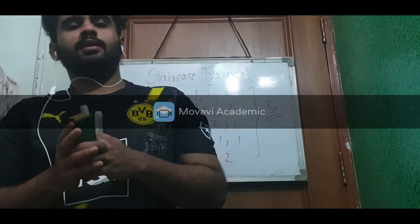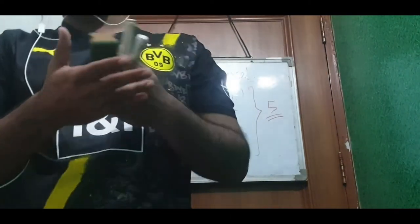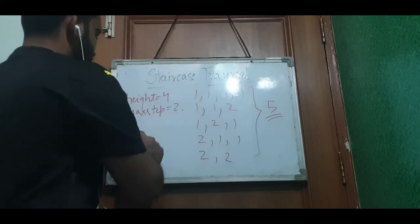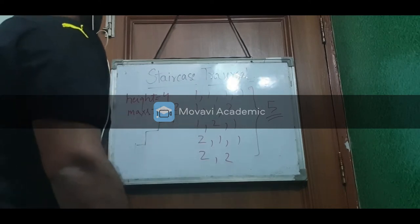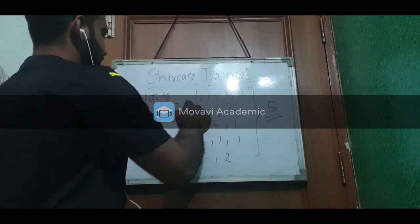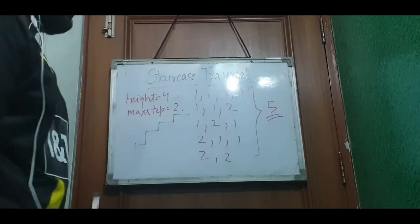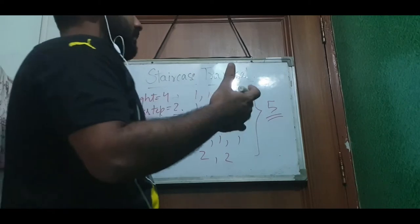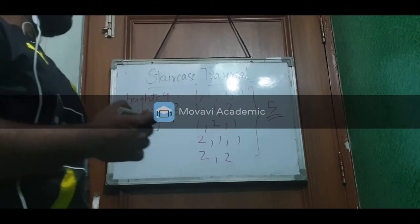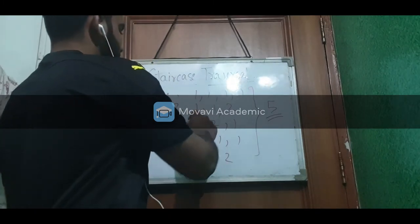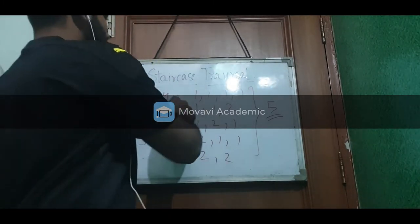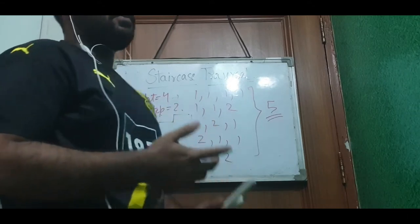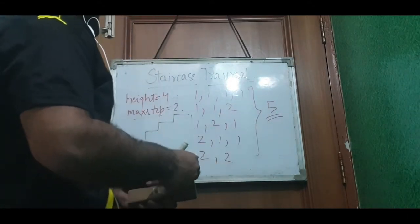Hello everyone, hope you all are doing good. Today we are going to see a new question: staircase traversal. In this question we have a staircase — a normal staircase which you will see daily in your life. The height given represents the number of steps. We also have a maximum step given, which denotes that we can jump from one to max steps. We have to find the number of ways we can climb the staircase. In this case, when the maximum height is 4 and maximum step is 2, the number of ways is 5.